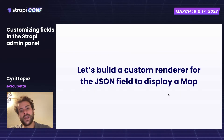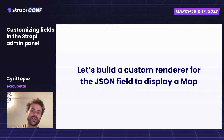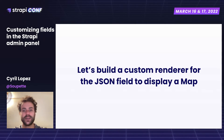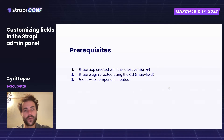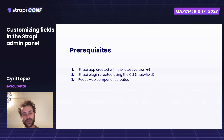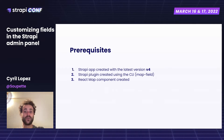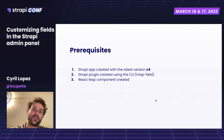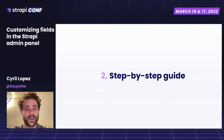We are going to create a Strapi application and build a custom renderer for the JSON field in order to display a map instead of the default input. I have already created a Strapi application using the latest version, which is v4, a Strapi plugin called the map field, and a React map component that we are going to use in order to change the JSON field. Let's dive into the code.